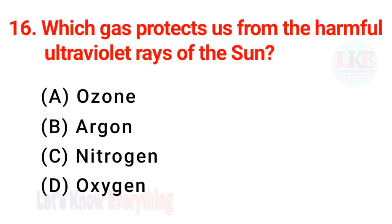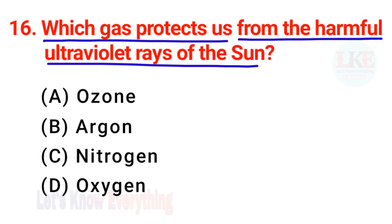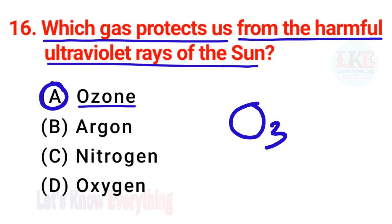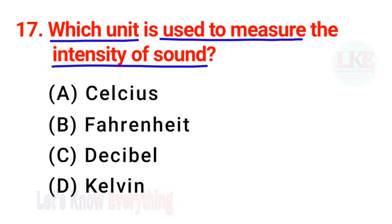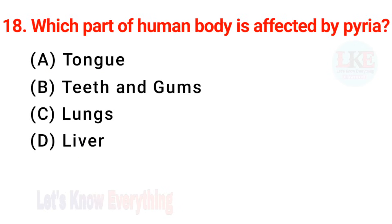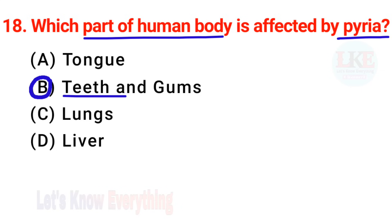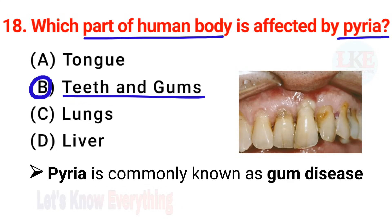Question number 16: which gas protects us from the harmful ultraviolet rays of the sun? Right answer option A — ozone, symbol is O3. Question number 17: which unit is used to measure the intensity of sound? Right answer — decibel, symbol is dB. Question number 18: which part of the human body is affected by pyorrhea? Right answer option B — teeth and gums. Pyorrhea is commonly known as gum disease.